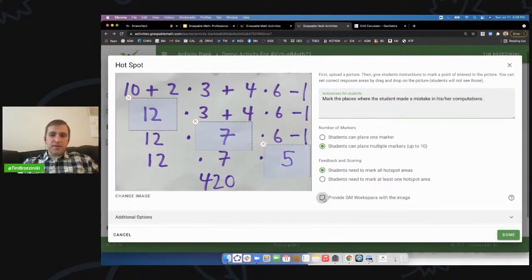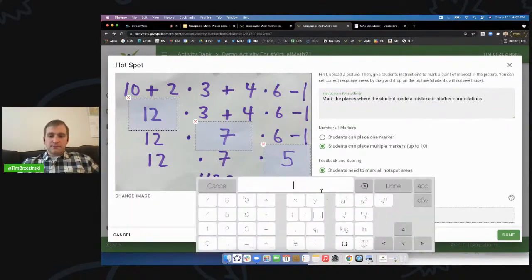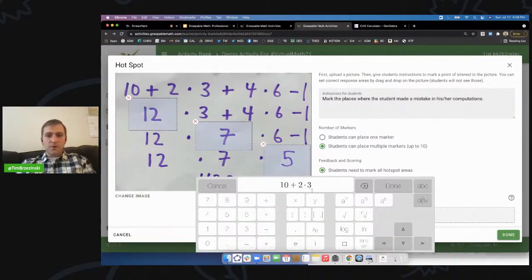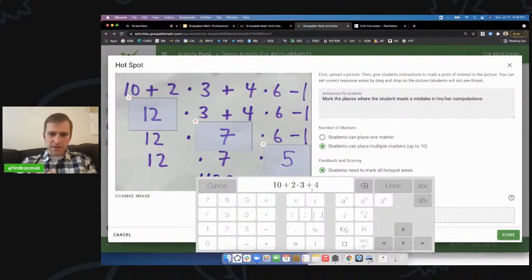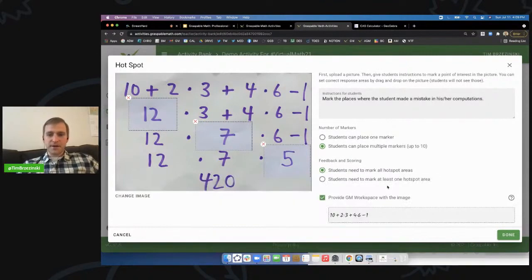So then I hit done. I could provide a workspace in the image there. And maybe I want to give them a workspace. 10 plus two. Maybe I want this to be a learning experience or a relearning experience that darn it, you don't add before you multiply. Right. Let Graspable Math do the shouting, not you. See what I'm saying? But again, the more actively engaged they are, the better it is. Right. I'll just hit done for now.